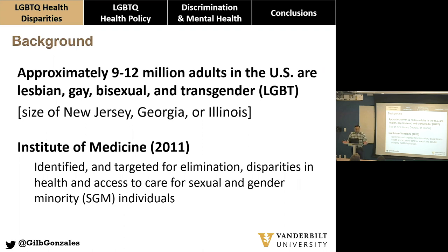Some of the best data sets we have suggest about nine to twelve million adults in the US identify as lesbian, gay, bisexual, queer, and/or transgender. This is probably an undercount, as it relies on data where people have to disclose their sexual orientation in a big CDC national data set. But it's still a pretty large population — the size of New Jersey, Georgia, or Illinois — and it's gaining more attention in policy spaces.